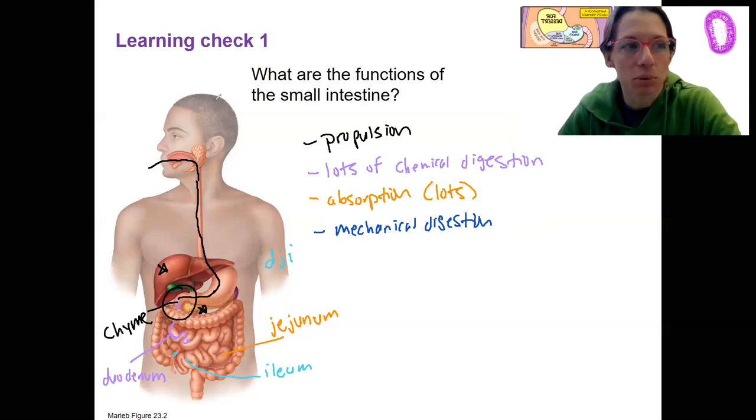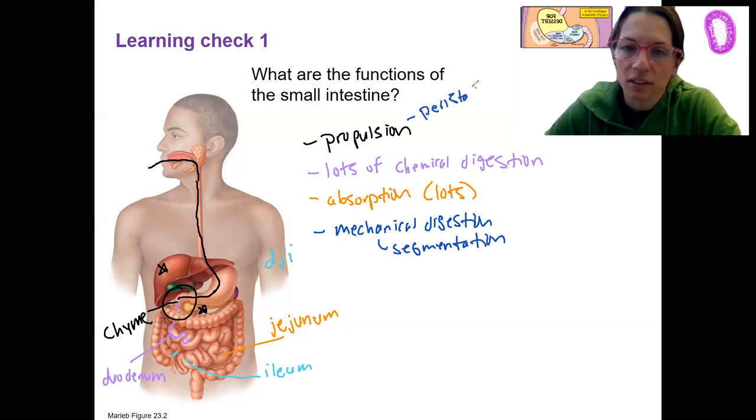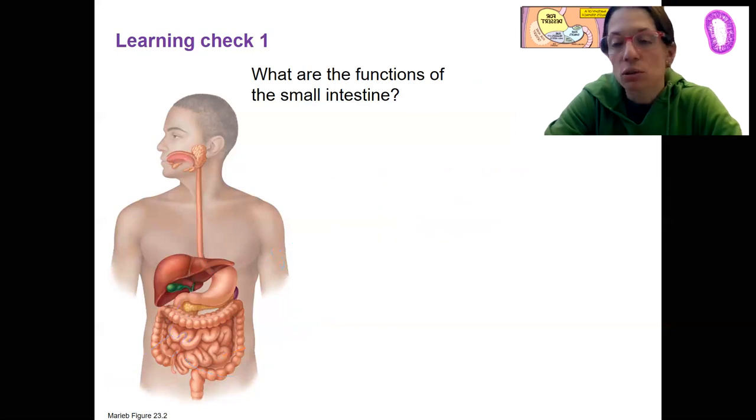There's a special way of mechanically digesting. It's not going to be the same as in the stomach, right, where we're sloshing, churning, but it's somewhat similar. It's small intestine initiated or controlled. It's going to be primarily segmentation is what this is called. So propulsion is mostly peristalsis, mechanically digesting is going to occur via segmentation.